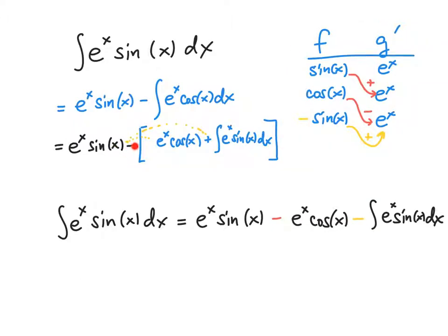So if I distribute the minus sign through this integral, I'll get a minus e to the x cosine x. So that's a minus e to the x cosine x, as promised. So the positive e to the x cosine x and a minus e to the x cosine x. The first term is e to the x sine x — positive e to the x sine x — then a minus e to the x cosine x. And then since this is a negative sine x and this is a positive e to the x, this minus sign is from this product here. That's why I drew this little curve here.